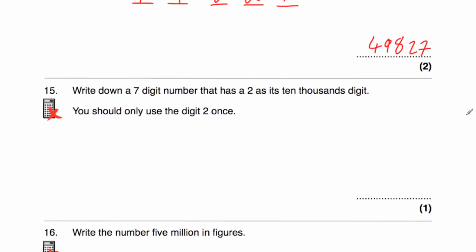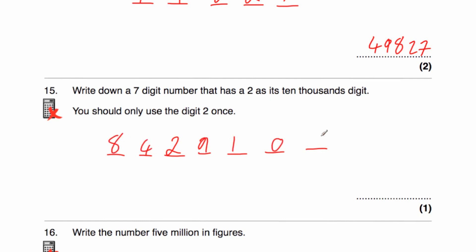Question number 15 says write down a 7-digit number. It's got a 2 as its tens of thousands digit, and we may only use the digit 2 once. So we can use any other digits we want in the remaining positions. I'm going to choose 8, 4, 9, 1, 0, 5. So the number I've chosen is 8,429,105. That number is a 7-digit number and it's got a 2 in its tens of thousands digit.